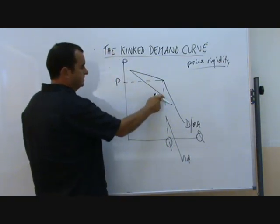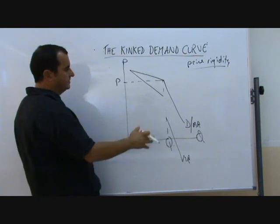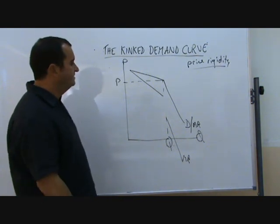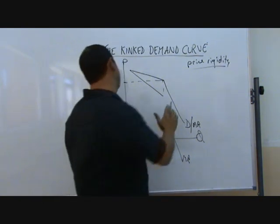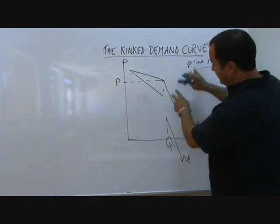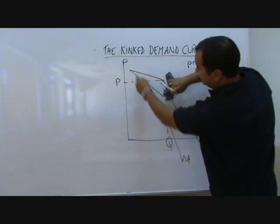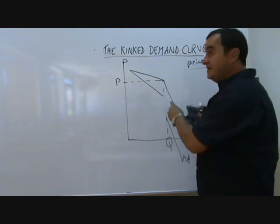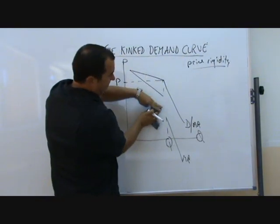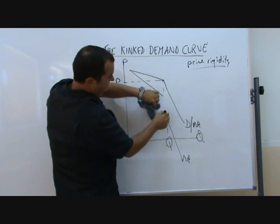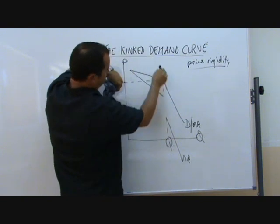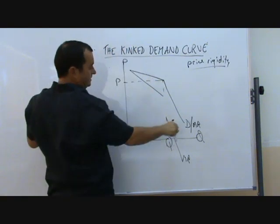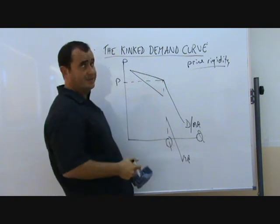Now why does that discontinuity occur? It only occurs with the kinked demand curve. The reason is this: if you imagine just this half of the diagram it makes sense that the MR curve is twice as steep as the AR curve. Then if you just imagine this half, again this is twice as steep as this, and it's as if we were to continue this demand curve up we would see that this is the associated MR curve. So it does make sense.